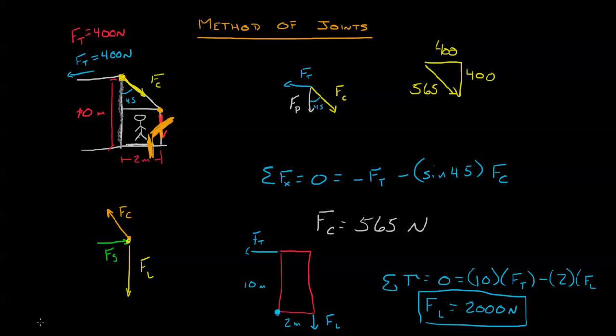If we do this, this is called the method of sections. Method of sections allows us to look at—to choose—through careful use of a free body diagram, allows us to choose which components we already know and which singular components we want to find out.